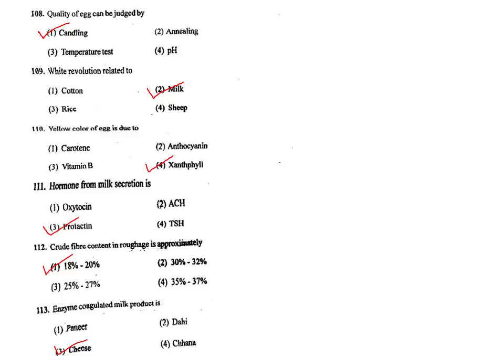Q110. Yellow color of egg yolk is due to the presence of xanthophyll. The correct answer is option 4.